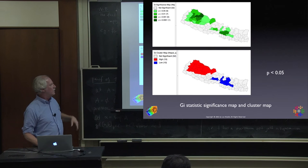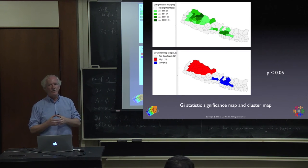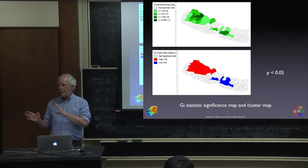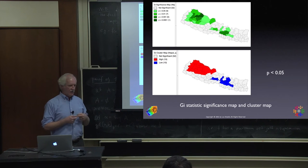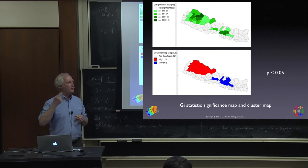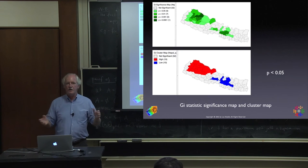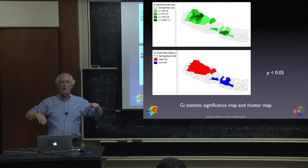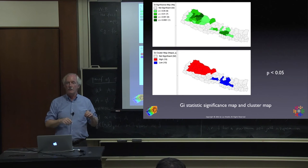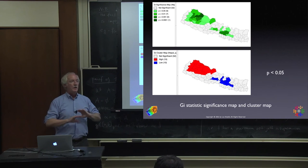A major difference between the G family of statistics and Moran's I is that there are no local outliers in the G statistics. Because G statistics are summations — looking at whether the sum is larger or smaller than expected under spatial randomness — they identify groupings of large or small values, interpreted as hot spots or cold spots. There are no spatial outliers.